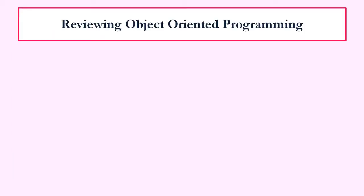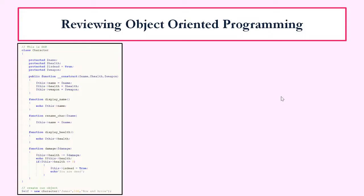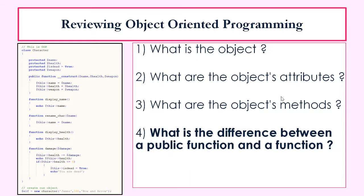Before we start looking at the concepts of public, private, and protected attributes, let's review what object-oriented programming looks like. This is some code that we created in the last video. What I would like you to do is stop the video and see if you can quickly answer these questions. If you're finding some of the questions hard, try and go back and review the previous videos and that will help you.